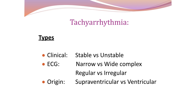Tachyarrhythmia can be further classified based on clinical findings, ECG, and origin. Beyond stable versus unstable, we assess whether the QRS complex is narrow or wide, whether the rhythm is regular or irregular, and whether the arrhythmia is supraventricular or ventricular in origin. There is a separate lecture on ECG rhythm interpretation for this.